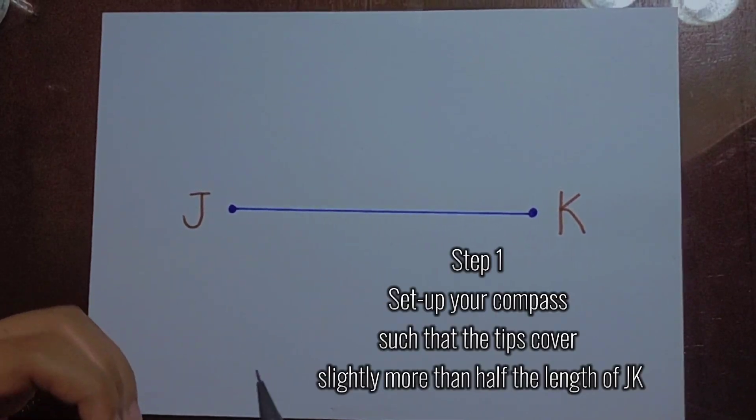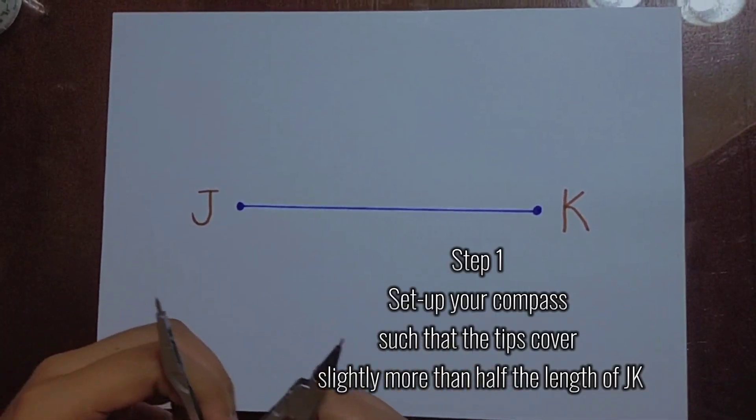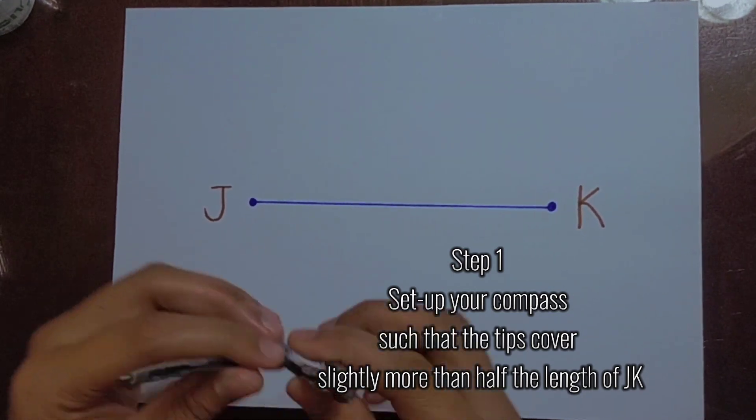Step 1. Set up your compass such that the tips cover slightly more than half the length of JK.